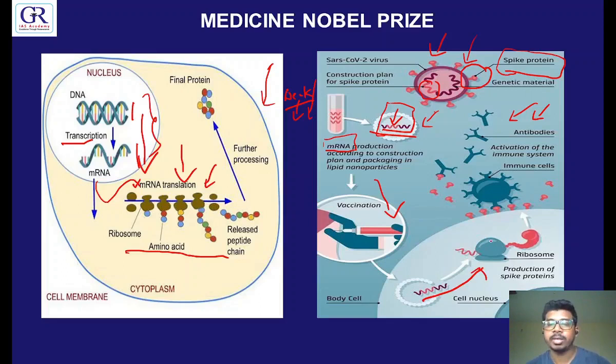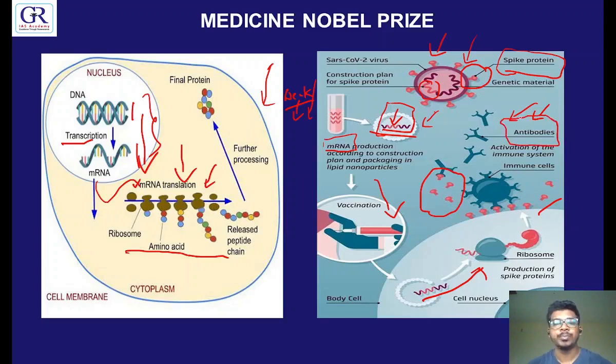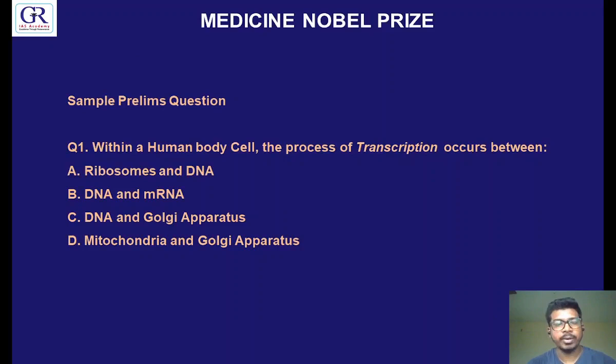Now spike proteins are inside the human body, so our immune system responds as if a real virus came from outside. Our immune system produces antibodies. Now we have antibodies, but we did not catch the disease. In future, if we catch the real disease, we have antibodies ready to protect us. That is the whole concept of mRNA. This work of these two eminent personalities helped us produce the vaccine in a short time.